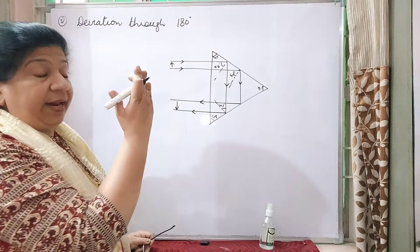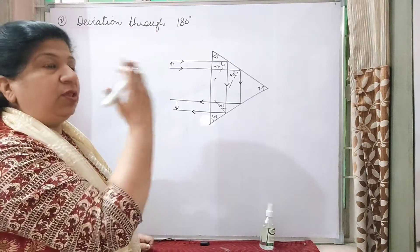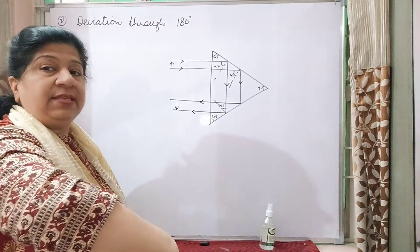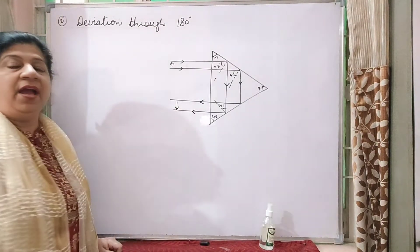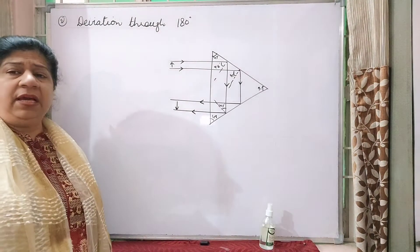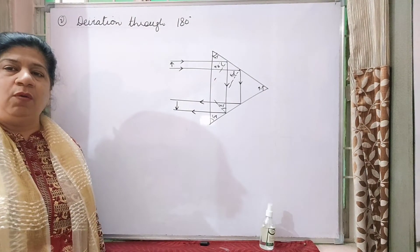So this was the position of the object and this is the position of the image. And it has been deviated by 180 degree. So again the diagram becomes very important. Nothing as theory you have to write it. Only the diagram.